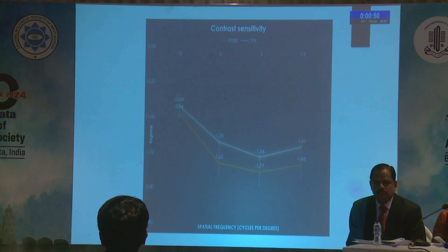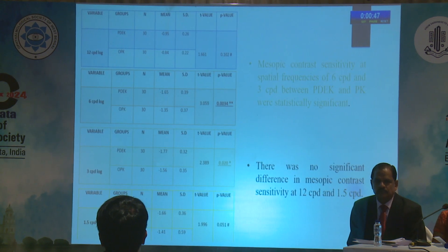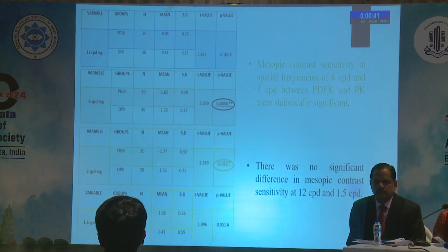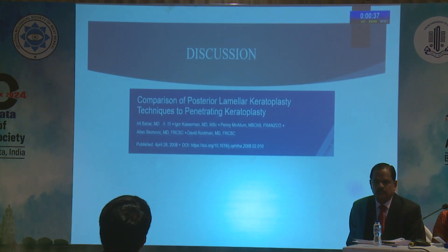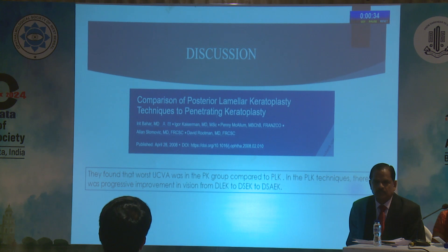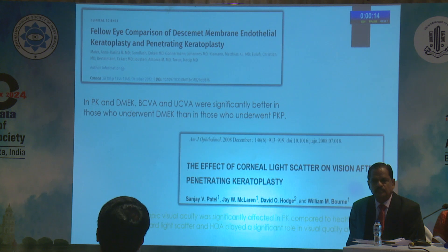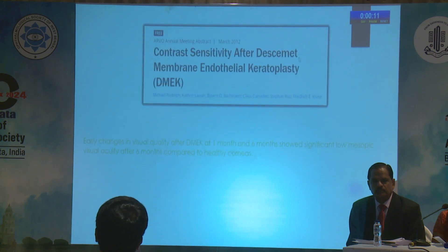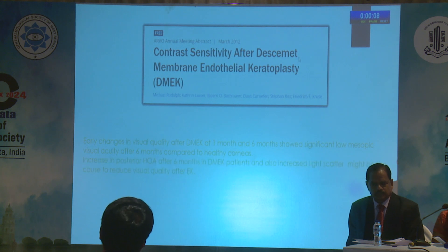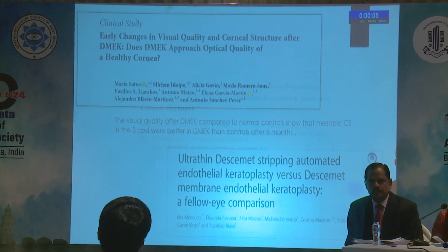Contrast sensitivity showed a significant difference at 3 and 6 cycles per degree between PDEC and OPK, which was statistically highly significant. There was no significant difference in contrast sensitivity at 12 cycles and 1.5 cycles per degree. Looking at prior studies, there was better progressive improvement in vision from DSEK to DSAEK to DMEK. Other studies also showed that best corrected and uncorrected visual acuity was significantly better in DMEK compared to those who underwent PKP. Corneal light scatter studies by Sanjeev Patel showed a significant effect of mesopic visual acuity in PK compared to healthy corneas, and studies on DMEK showed significantly low mesopic visual acuity after 6 months.